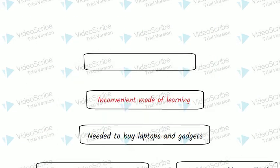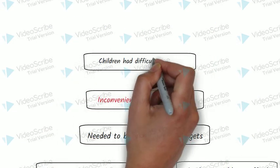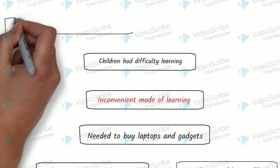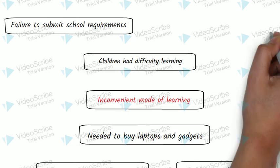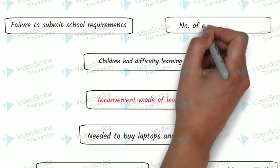From the causes, we proceed to the effects. Because of inconvenience, children had difficulty learning. And because of this difficulty, they failed to submit school requirements. And then the number of enrollees dropped.